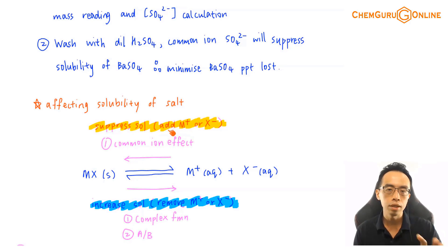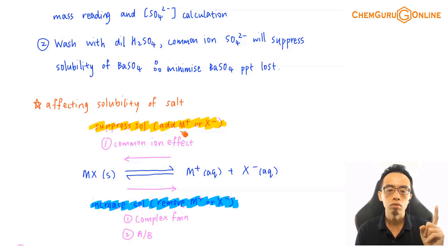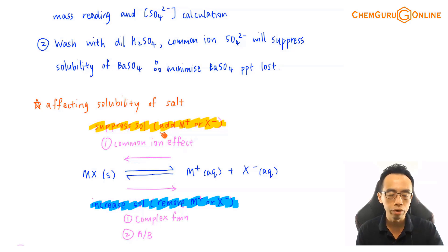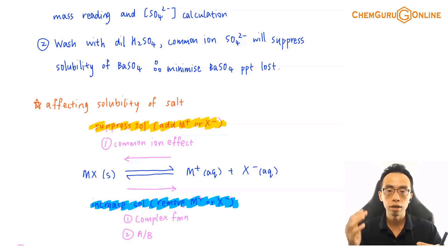The common ion effect is explicitly covered in the syllabus, so we usually have a clear understanding of how to suppress solubility — add a common ion. But if I only know how to suppress solubility and not how to increase it, then I can't fully manipulate a salt. Depending on the process, sometimes I want more of the salt to dissolve, sometimes less. So I need to be able to manipulate solubility both ways to truly control the system.